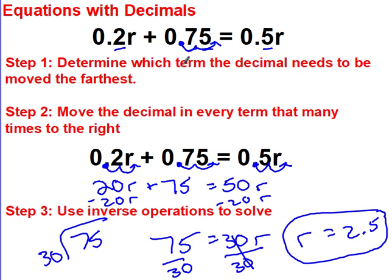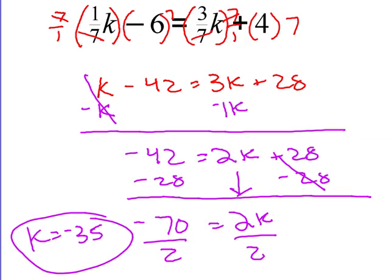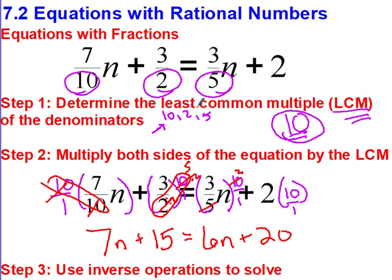Quick recap for decimals: determine which term needs the decimal moved the farthest, then move the decimal that many times in every term — which is the same as multiplying everything by a power of 10. For fractions: determine the lowest common multiple of the denominators, then multiply every single thing in the equation by that lowest common multiple, and that will get rid of all your fractions.